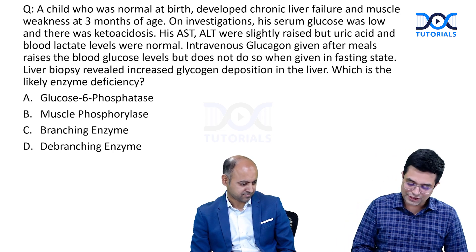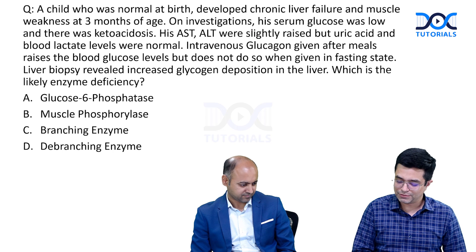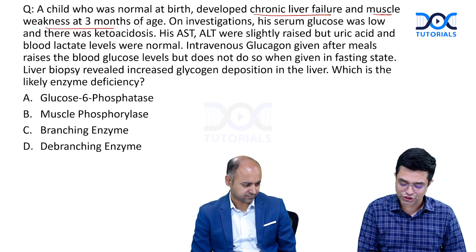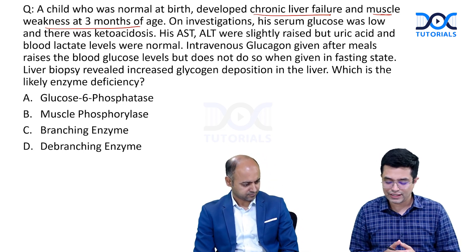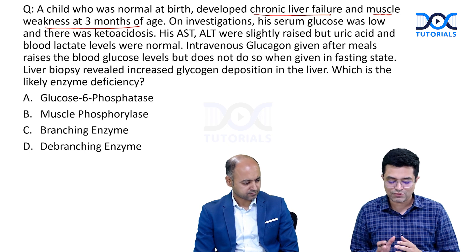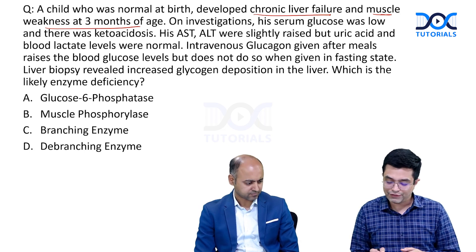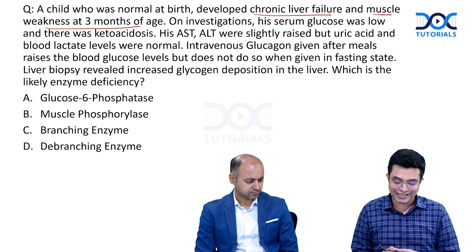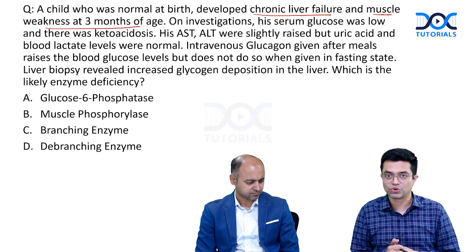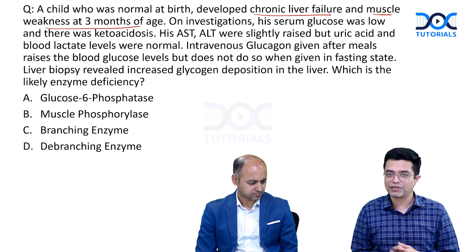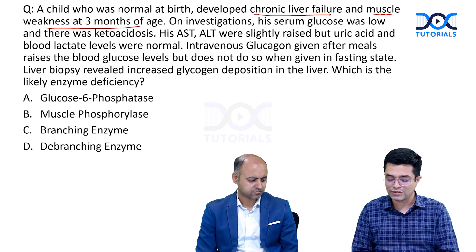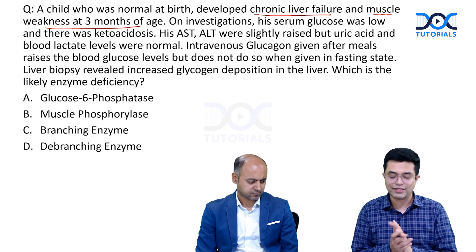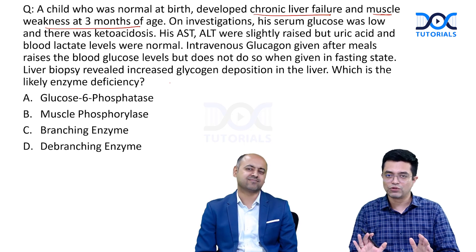The question: a child who was normal at birth developed chronic liver failure and muscle weakness at three months of age. On investigation, serum glucose was low and there was ketoacidosis; AST and ALT were slightly raised; uric acid and blood lactate levels were normal. IV glucagon test was done — after meals it raised blood glucose, but in the fasting state there was no improvement. Liver biopsy revealed increased glycogen deposition.